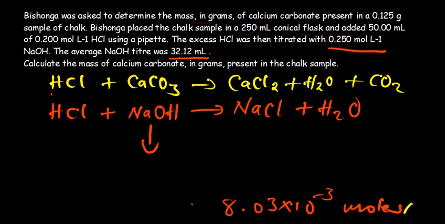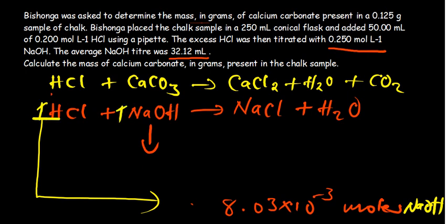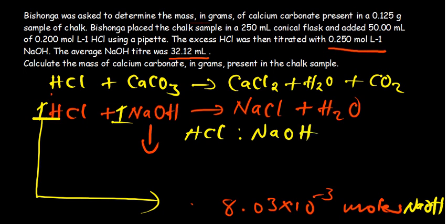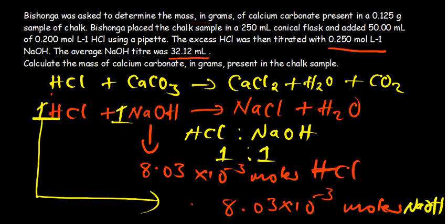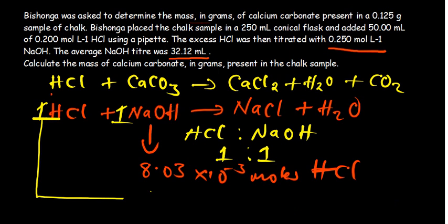This is why it was necessary to write the equations — so we can see the mole ratios. Hydrochloric acid and sodium hydroxide are in the ratio of 1:1, so per every mole of sodium hydroxide there is one mole of hydrochloric acid reacting. Now that we have determined the number of moles of sodium hydroxide, we have the number of moles of hydrochloric acid as well, since they are in a 1:1 ratio. So 8.03 × 10⁻³ is the equivalent number of moles of hydrochloric acid that were in excess from the second reaction — this is how much remained after the first reaction.